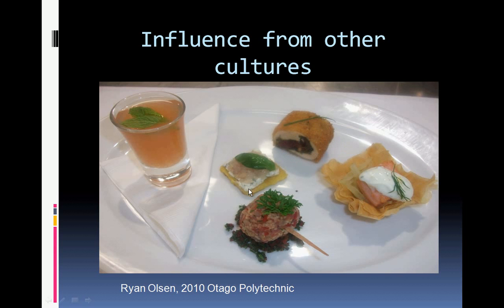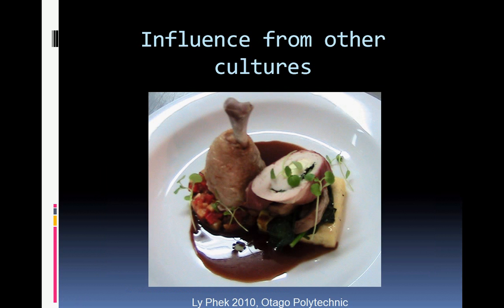There was also some polenta and raw fish flavoured on top. We can see how other cultures can have a major influence in our food design. Here we see another student's work influenced by Italian culture. Within this dish, he used polenta, parma ham on chicken, and some of the Mediterranean flavours of the region. The chicken leg was stuffed with pine nuts — it's quite a heavily influenced Italian dish.